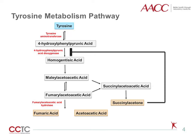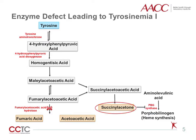The final irreversible step involves the hydrolysis of fumarylacetoacetic acid to form fumaric acid and acetoacetic acid. Deficiencies in any of the three key enzymes result in accumulation of tyrosine and/or some of its metabolites, such as succinylacetone, that can be harmful to the body.